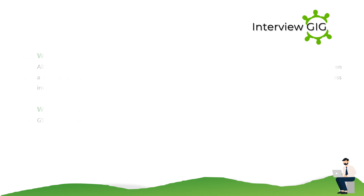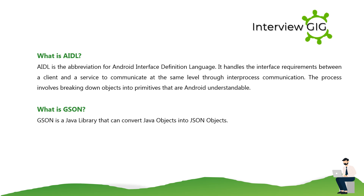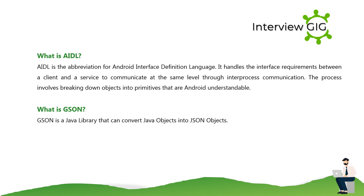What is AIDL? AIDL stands for Android Interface Definition Language. It handles the interface requirements between a client and a service to communicate at the same level through inter-process communication. The process involves breaking down objects into primitives that Android understands.